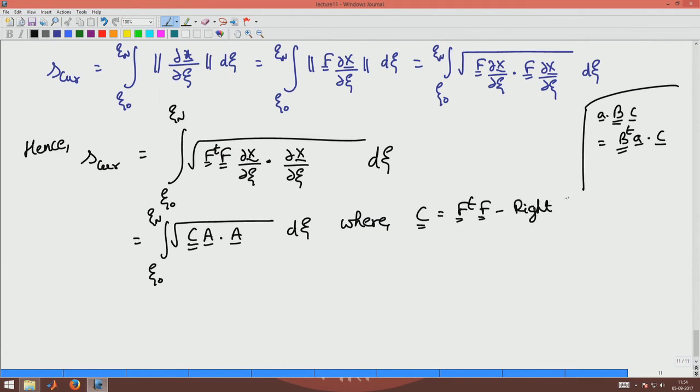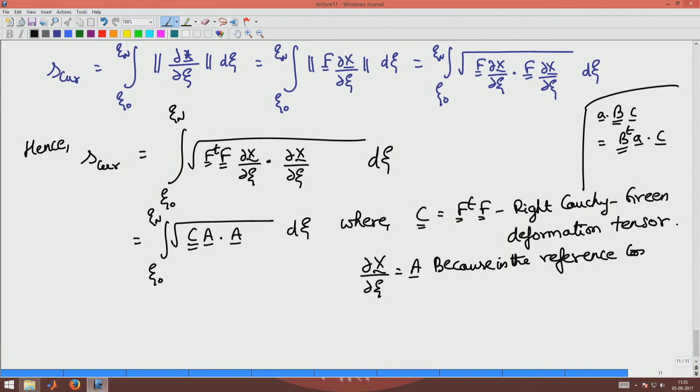This is the right Cauchy-Green deformation tensor. And here I have replaced ∂X/∂X to be A because in the reference configuration we considered a straight line.